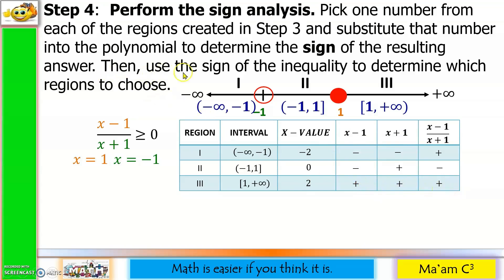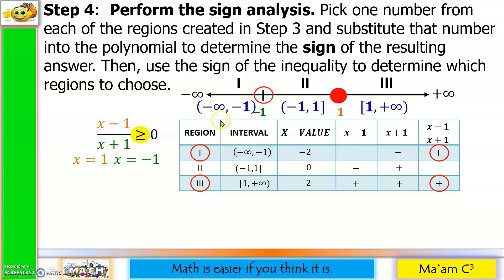Use the sign of the inequality to determine which regions to choose. Since the sign is greater than or equal to, we choose positive values in the last column. Region 1 is positive and region 3 is positive, so we shade both region 1 and region 3 on the number line.